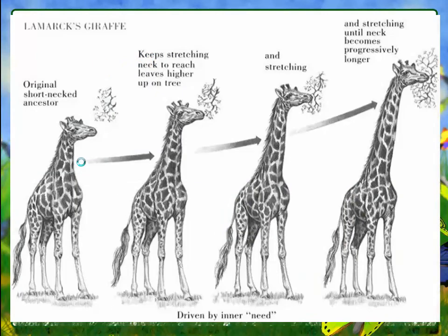One of the questions at the beginning of this video was about giraffes. According to Lamarck, a short-necked ancestor kept stretching its neck to reach leaves higher in the trees — the food source for giraffes — and could actually stretch its neck to make it longer. He also proposed that animals have an inner need to become more perfect — more perfectly suited for their environment.